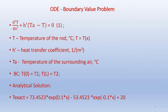The differential equation for this boundary value problem is given as d²T/dx² plus H dash times (T_a minus T) equals 0. Here T represents the temperature of the rod in degrees Celsius and is a function of x. H dash is the heat transfer coefficient in 1 over meter squared, and T_a is the temperature of the surrounding air in degrees Celsius.